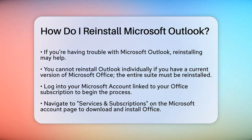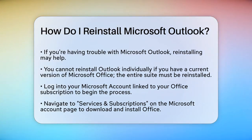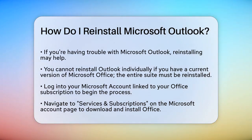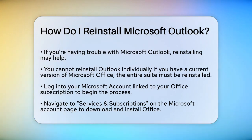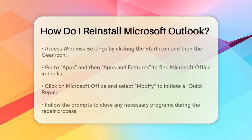To start, log into your Microsoft account associated with your Office subscription. Go to the Microsoft Account page, click on Services & Subscriptions, and then Download & Install Office from there. You can find this option at account.microsoft.com/services.